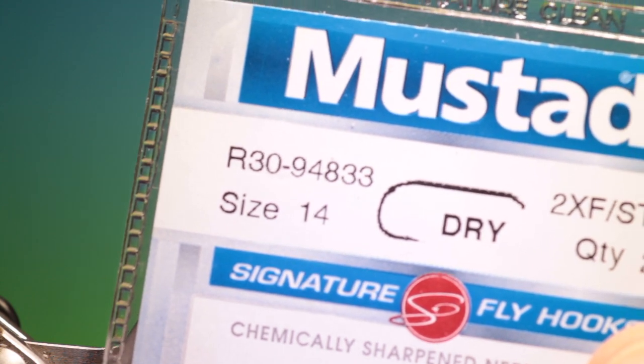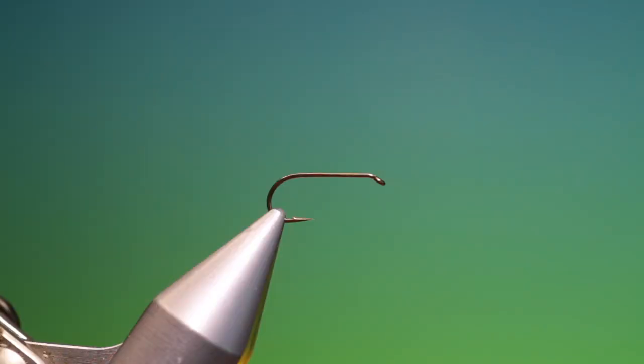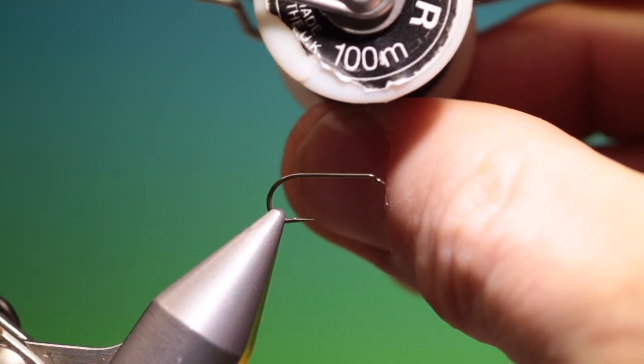Okay, we'll start with the Mustad R30 size 14 dry fly hook. We have some sheer 40 knot black thread.